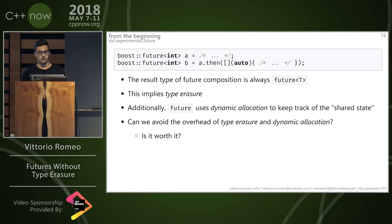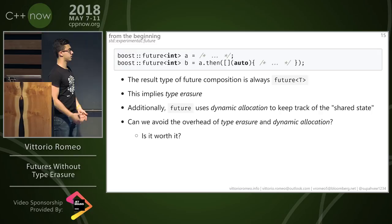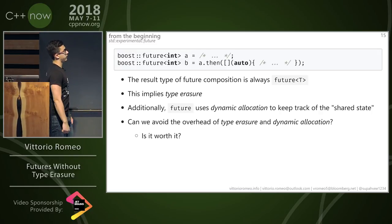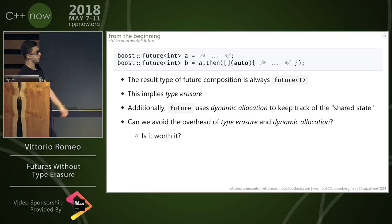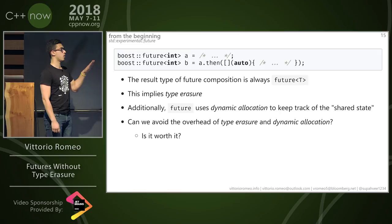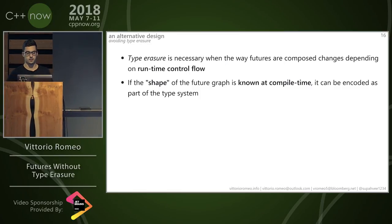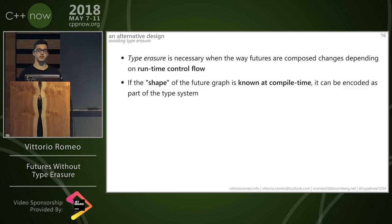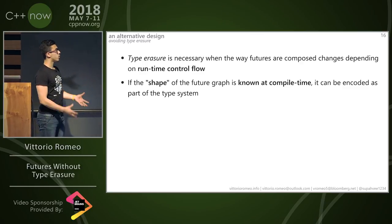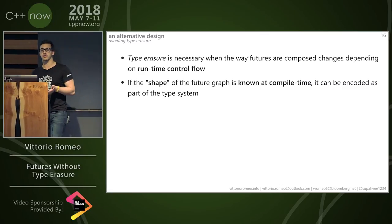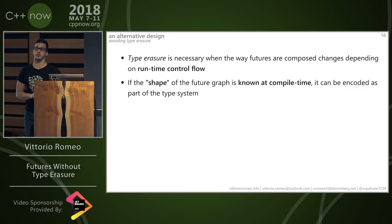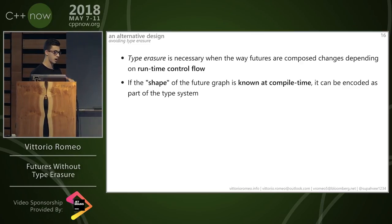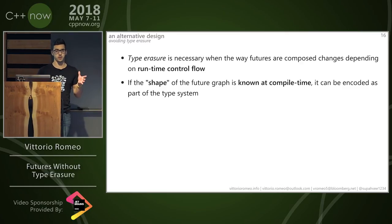The result type of future composition is always future<T>, which implies type erasure. Additionally, future uses dynamic allocation to keep track of the shared state, requiring both type erasure and dynamic allocation. The goal of this talk is to see if we can avoid that overhead and if it's worth it. Type erasure is necessary only when the way you compose a future graph depends on runtime control flow — if you know the shape of the future graph at compile time, you can encode it as part of the type system.